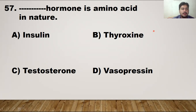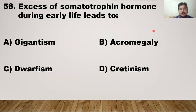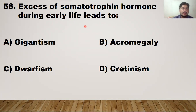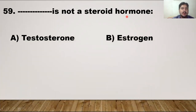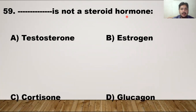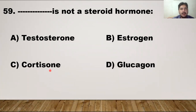MCQ number 58: which one is not a steroid hormone? Testosterone and estrogen are both steroid in nature. Cortisone is also a steroid. So glucagon is a hormone that is protein in nature. The right answer is option D — glucagon.